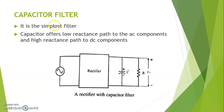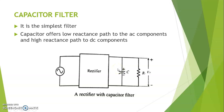The capacitor filter is the simplest of all types of filters. It offers low reactance to AC components and high reactance to DC components, which means that the capacitor will block DC and will allow only AC to pass through it.